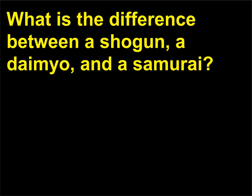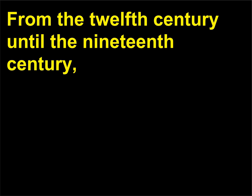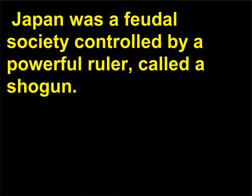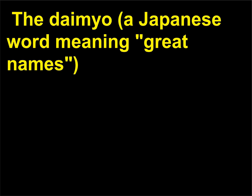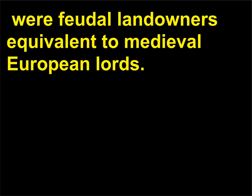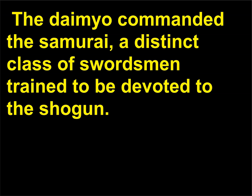What is the difference between a shogun, a daimyo, and a samurai? From the 12th century until the 19th century, Japan was a feudal society controlled by a powerful ruler called a shogun. The shogun maintained power over his large territory. The daimyo — a Japanese word meaning great names — were feudal landowners equivalent to medieval European lords. The daimyo commanded the samurai, a distinct class of swordsmen trained to be devoted to the shogun.